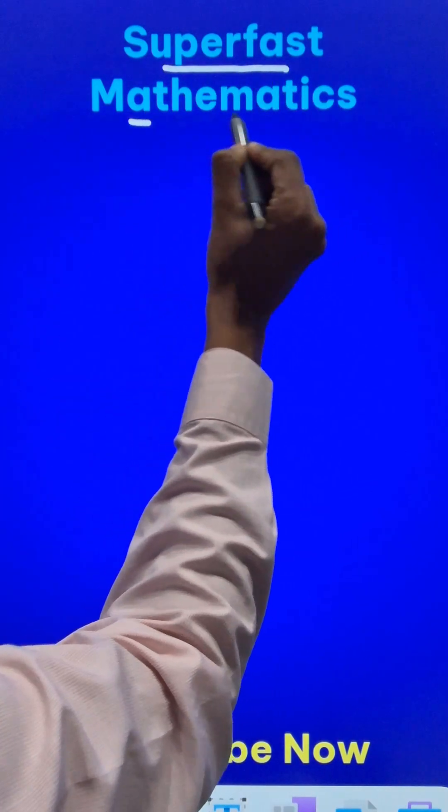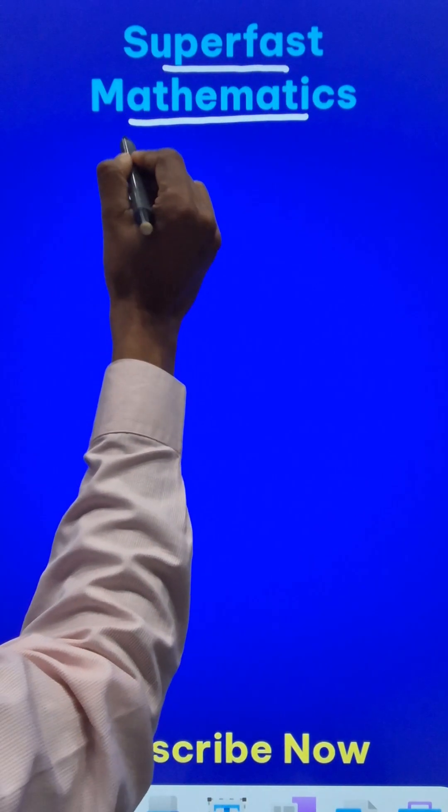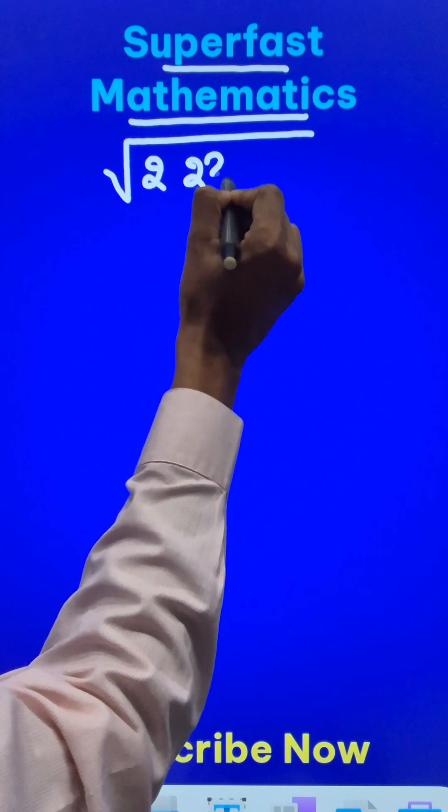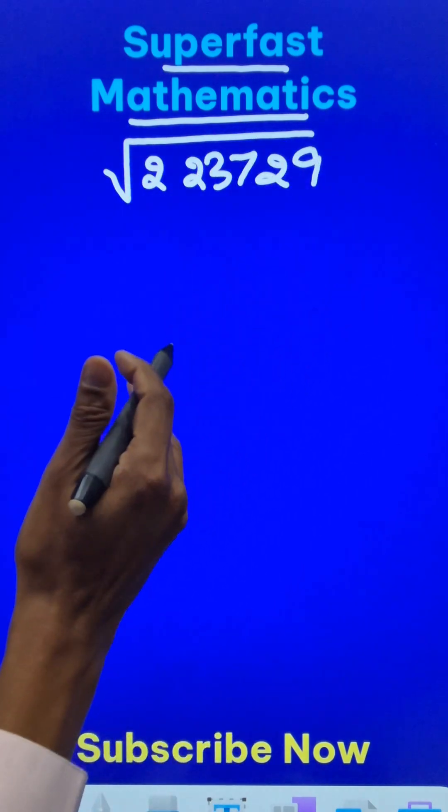Another super fast short trick for finding the square root of a big number which contains 6 digits like 223,729 using this method.